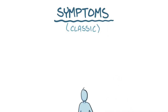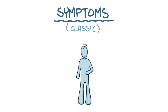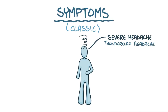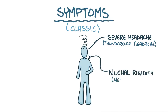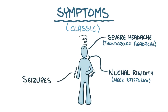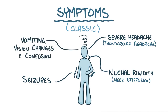The classic symptom of a subarachnoid hemorrhage is the sudden onset of a severe headache, called a thunderclap headache, often described as the worst headache a person has ever had. There's also nuchal rigidity, or neck stiffness, which is caused by the blood irritating the meninges. Occasionally, people can develop seizures and symptoms of increased intracranial pressure, like vomiting, vision changes, and general confusion.